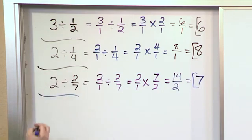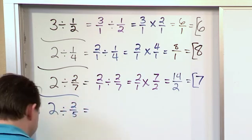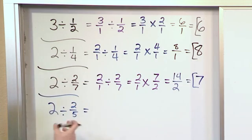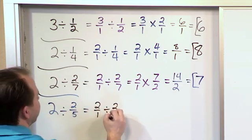Now for the next problem, what if we have 2 divided by 2 fifths? I know you probably get a little bit bored with this, but it's the same kind of thing. The 2 becomes 2 over 1, and we're still dividing by 2 over fifths.